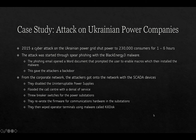In 2015, a cyber attack on the Ukrainian power grid shut power to 230,000 consumers for one to six hours. The attack started through spear phishing with malware called Black Energy 3 attached to emails. The phishing email opened a Word document prompting the user to enable macros, installing the malware and giving attackers a backdoor. From the corporate network, attackers got onto the SCADA network, disabled the uninterruptible power supplies (UPS), flooded the call center with a denial of service, tripped breaker switches for power substations, and rewrote firmware for communications hardware in the substations, making remediation difficult.